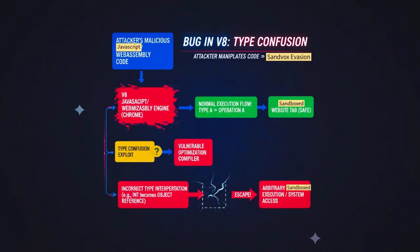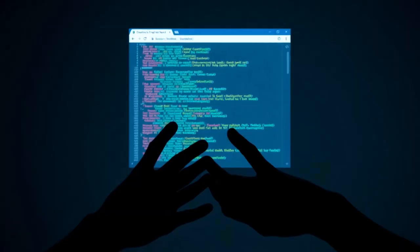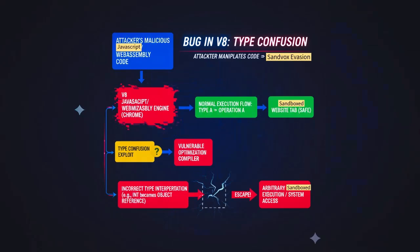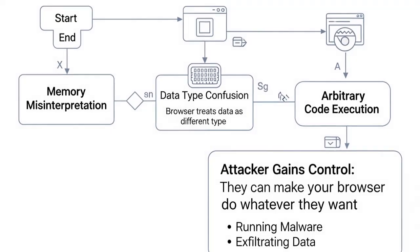A bug in V8, which is Chrome's JavaScript and WebAssembly engine, means an attacker can manipulate how your browser interprets code. Normally, browsers sandbox websites so each tab lives in its own safe little box. Type confusion breaks that box. When memory is misinterpreted, the browser can treat one kind of data as another, giving the hacker a doorway to execute arbitrary code. In plain English, they can make your browser do whatever they want — from running malware to exfiltrating data.